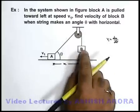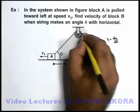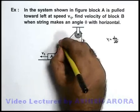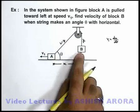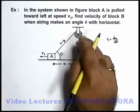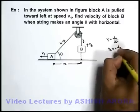And if the length of string we consider to be constant and it is say L, and the distance of block B from the topmost point of string is y, we can write this distance as L minus y. As block B is going up with velocity vB, y will be decreasing, so I can write vB is equal to minus dy/dt.